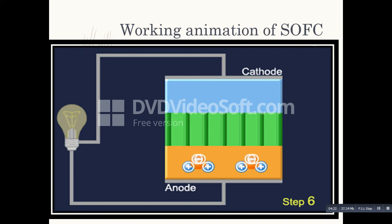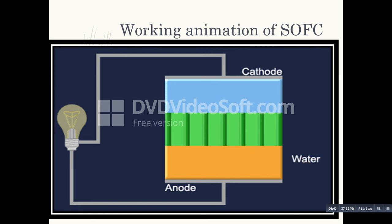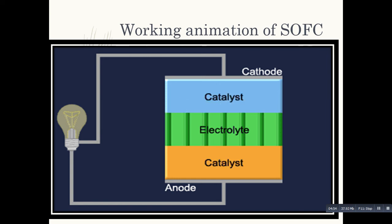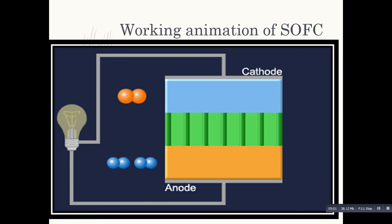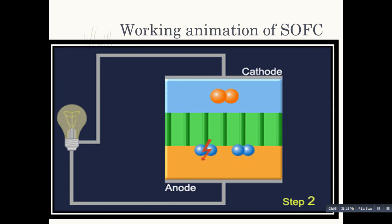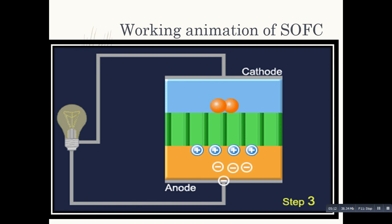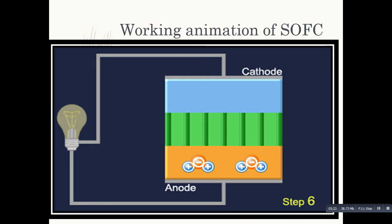The oxide ions move towards the anode side and combine with protons to form water, which is a byproduct of the solid oxide fuel cell. That is the working principle of the solid oxide fuel cell. Here you can see again the same working animation, where oxygen and hydrogen undergo oxidation-reduction phenomena, ultimately producing water as the byproduct.